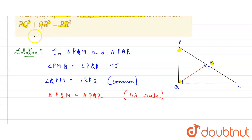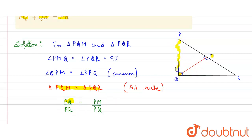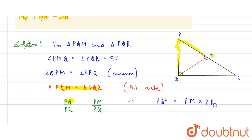Since the two triangles are similar, we can represent their sides in ratio. So PQ upon PR equals PM upon PQ — where PQ is the side, PR is the hypotenuse, and PM is the smaller hypotenuse. From this proportion, we conclude: PQ² = PM × PR. Mark this as equation 1.